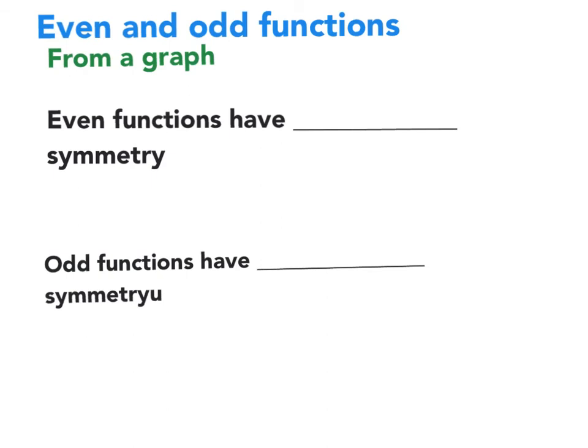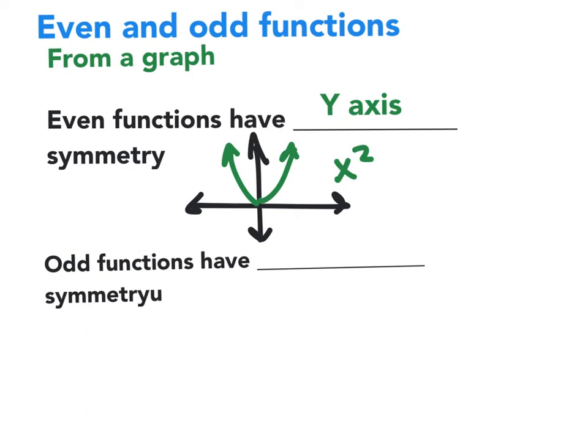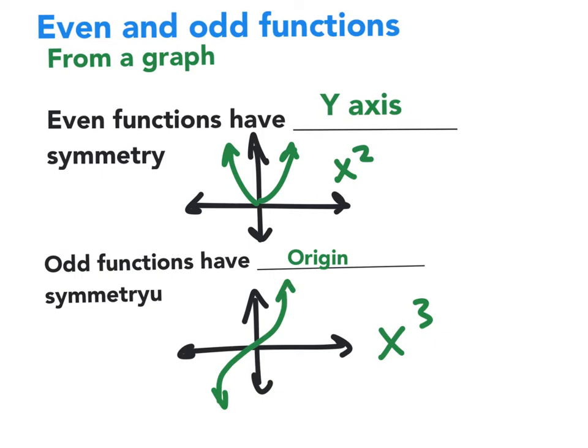Finally, we have even and odd functions. From a graph, even functions have y-axis symmetry, so they're symmetric about the y-axis. The function y equals x squared is a classic example of an even function. Now, odd functions have origin symmetry, and a classic example of a function with origin symmetry would be x cubed. This function, the parent function looks like that, and that has origin symmetry. So if you spun it 180 degrees about the origin, you'd get the same graph.